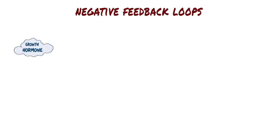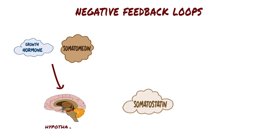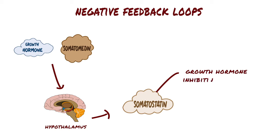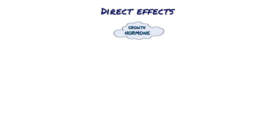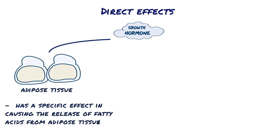Third, both growth hormone and somatomedins stimulate the secretion of somatostatin by the hypothalamus, which is also called the growth hormone inhibiting hormone. Growth hormone travels via the blood to various target tissues in the body to stimulate growth in two ways, directly and indirectly. The direct effect of growth hormone is due to stimulation of cellular metabolism, which leads to tissue growth. Growth hormone causes the release of fatty acids from adipose tissue, increasing the concentration of fatty acids in the body fluids, which fuels the increased metabolism of other cells in the body.